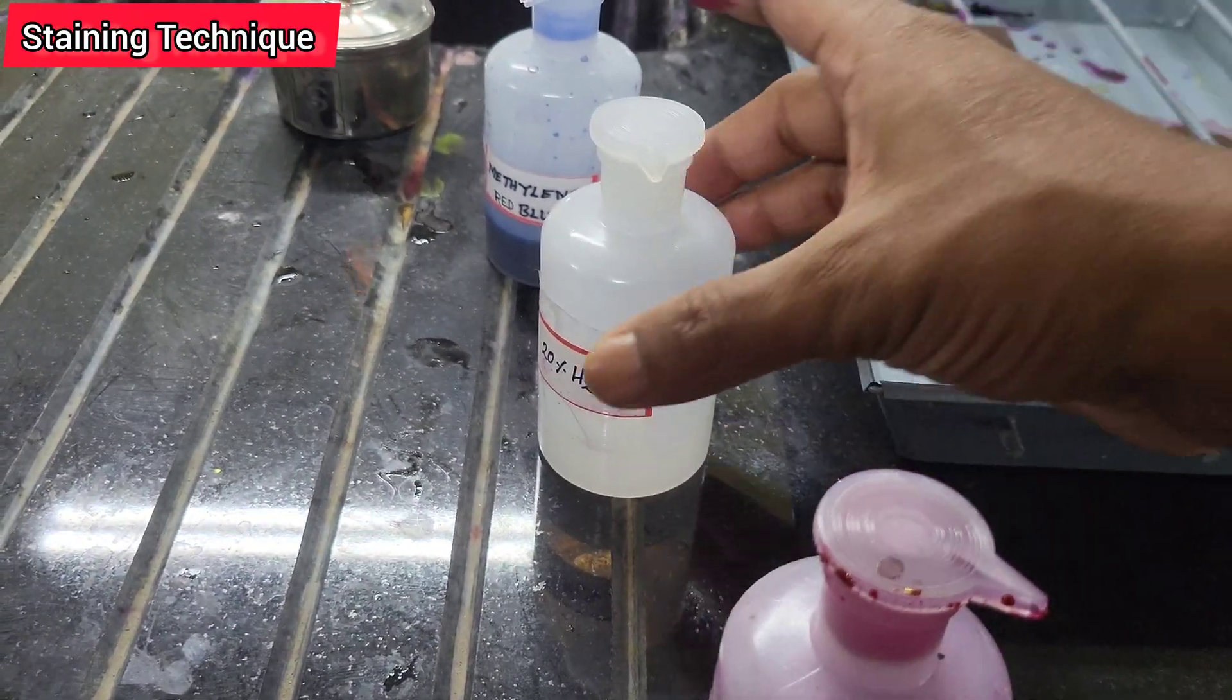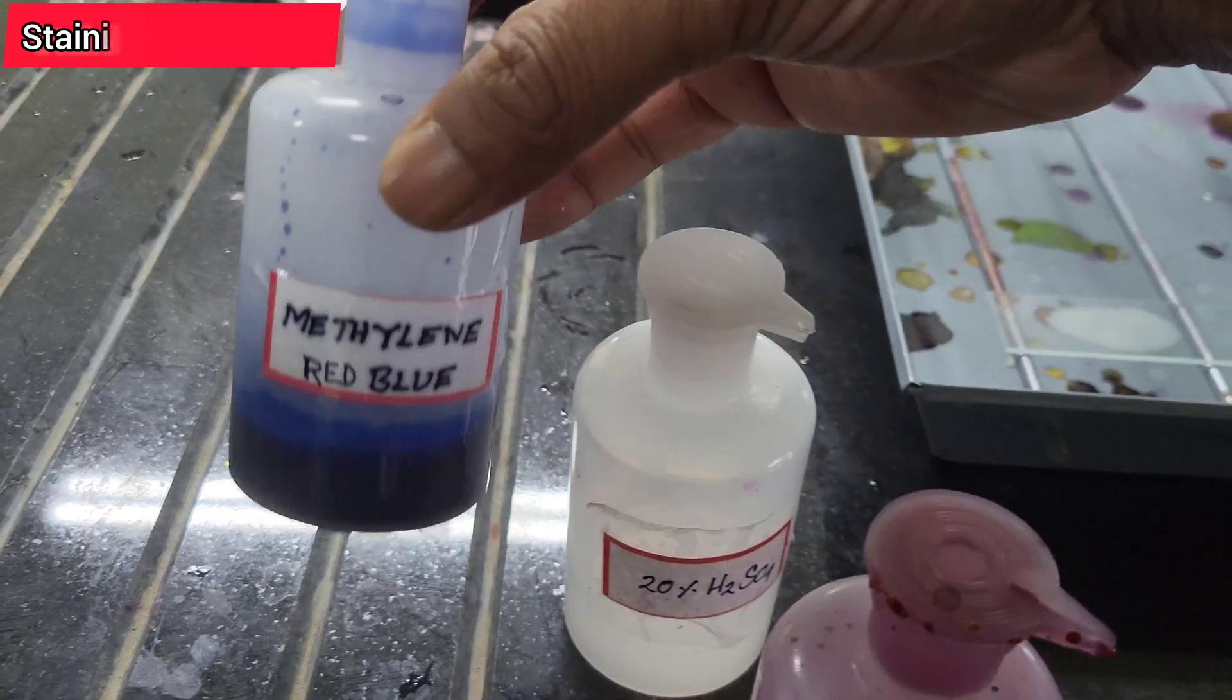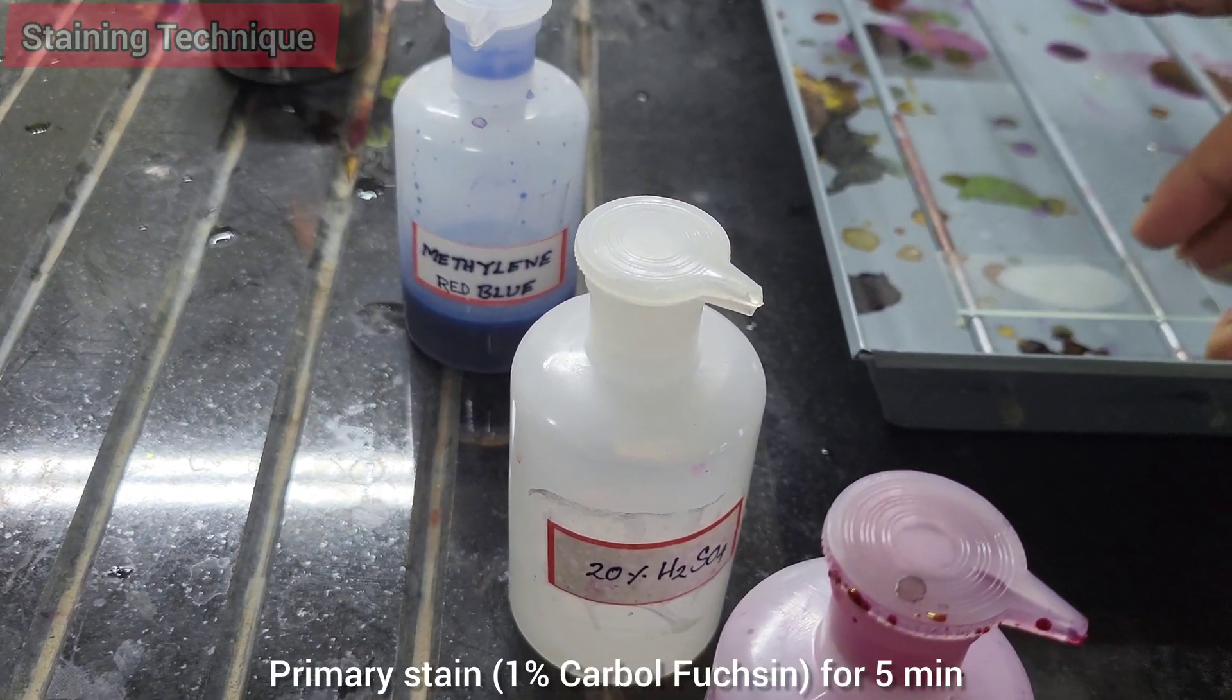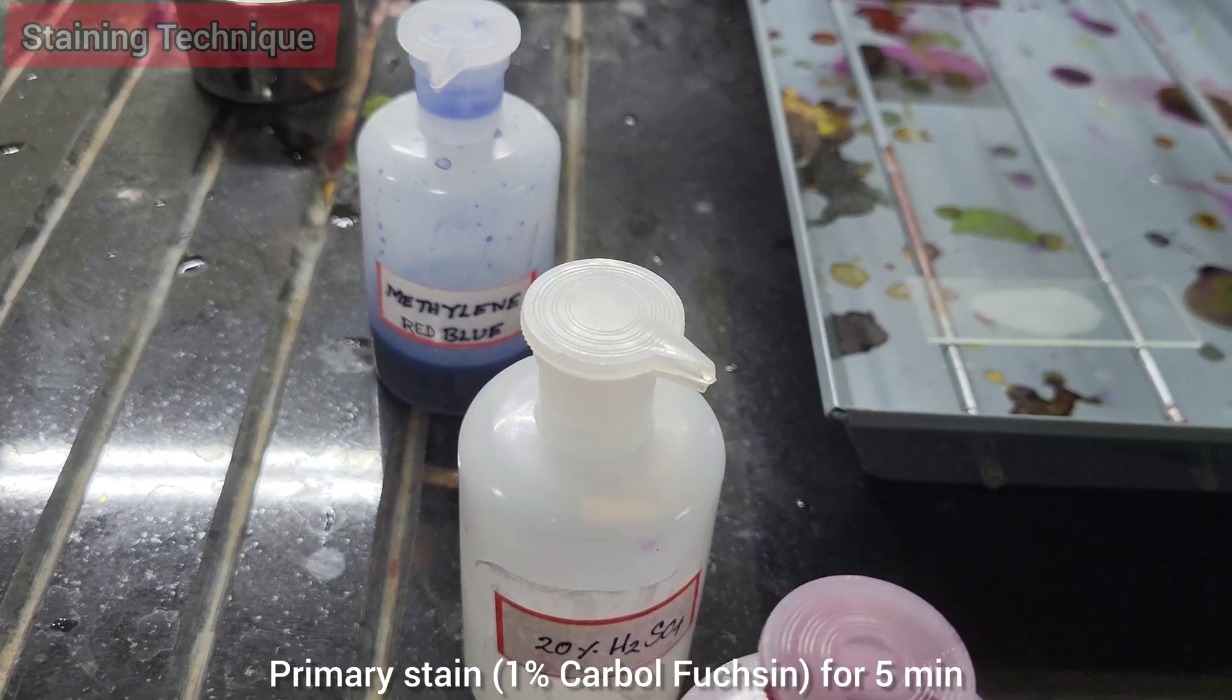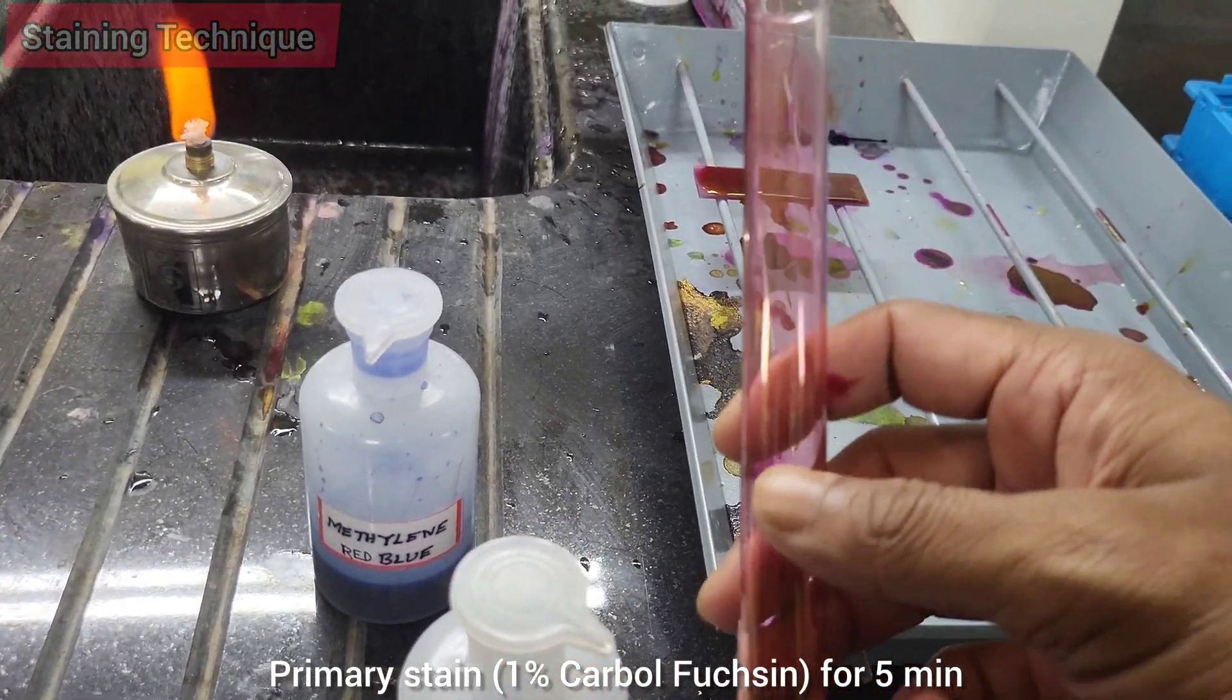Now it's time to stain the slide. For this we need primary stain carbolfuchsin, decolorizer, and a counter stain methylene blue. First step is primary staining. There are two ways: first, cover the smear with carbolfuchsin then heat gently using Bunsen burner or spirit lamp from bottom until the vapor arises.